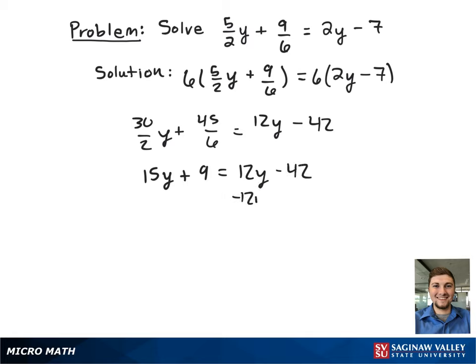We're then going to subtract 12y from both sides so we can cancel out the y's on the right hand side. And then we're going to subtract 9 from both sides to cancel out the single term on the left hand side.